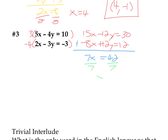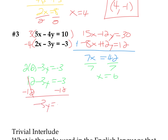I can divide both sides by 7 to get x equals 6. Now I go back to my original equations and plug in x equals 6. I'm going to pick the second equation: 2 times 6 minus 3y equals negative 3. That's 12 minus 3y equals negative 3. I subtract 12 on both sides and get negative 3y equals negative 15. We've got to be careful that we're not messing up with a negative sign somewhere when multiplying by negatives, subtracting negatives, or dividing by negatives.